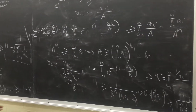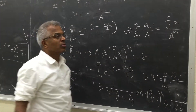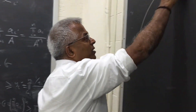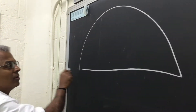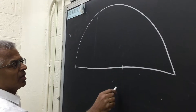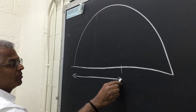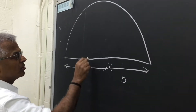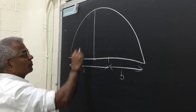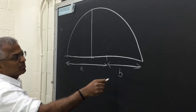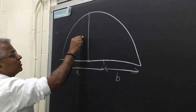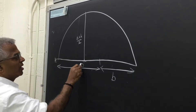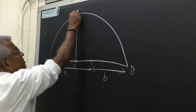We can also prove this geometrically for two numbers, very easily. Say I have a number a and a number b. Draw a semicircle — the diameter is a + b, so the radius is (a + b)/2. Let me mark the points as A, B, C.